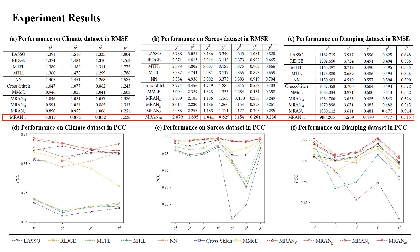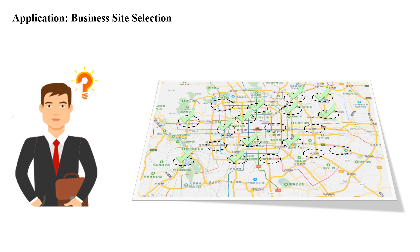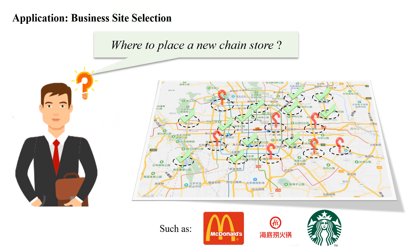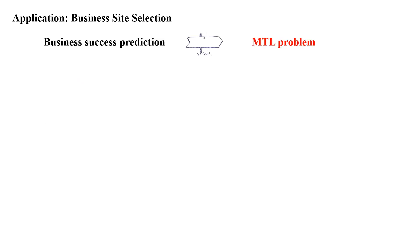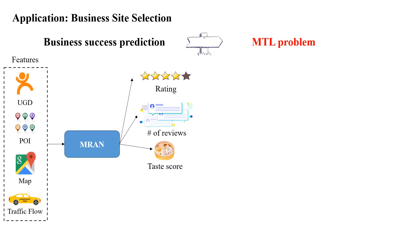In this paper, apart from two benchmark datasets, our problem is also tested on a real-world application: Business Site Selection. For a chain store manager, a common problem is where to place a new chain store. The Business Site Selection problem requires predicting multiple business criteria simultaneously, hence it is natural to be formalized as a multi-task learning problem.